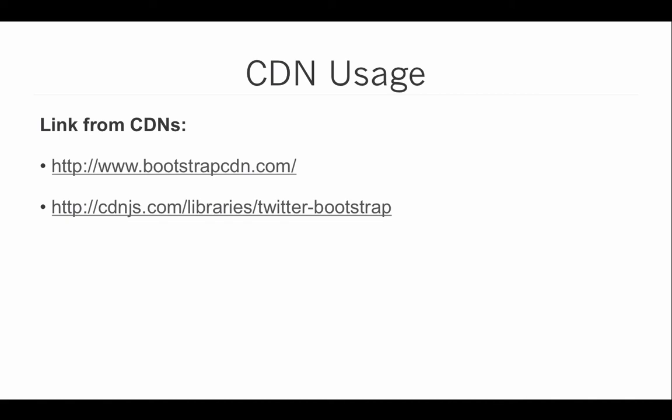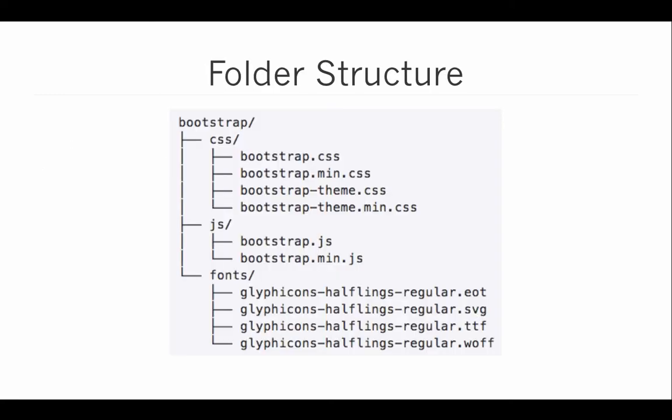You can also link to Bootstrap using a CDN or Content Delivery Network. The most common place people link to Bootstrap from is www.bootstrapcdn.com. Bootstrap is also shared on cdnjs.com under library/twitter-bootstrap. When downloading the compiled and minified version of Bootstrap, you get a zip file, and when you extract it, out pops a folder structure with a root folder called Bootstrap containing three folders: CSS, JavaScript, and fonts.